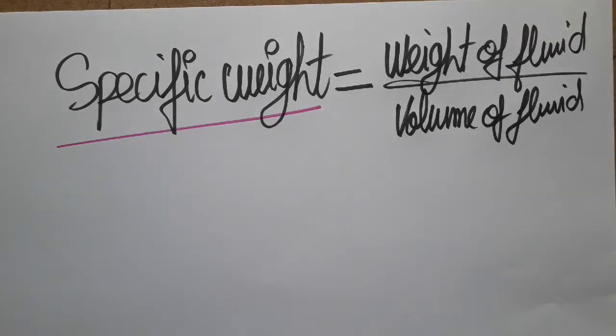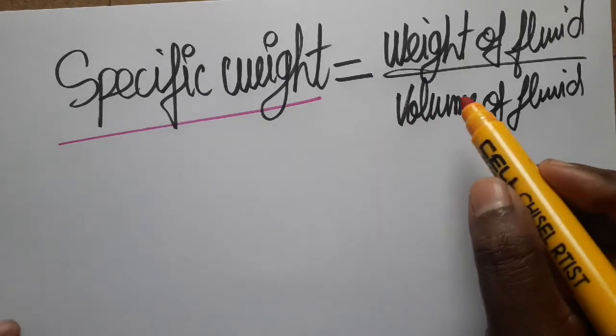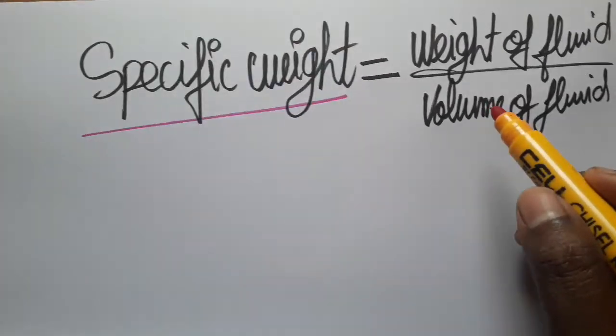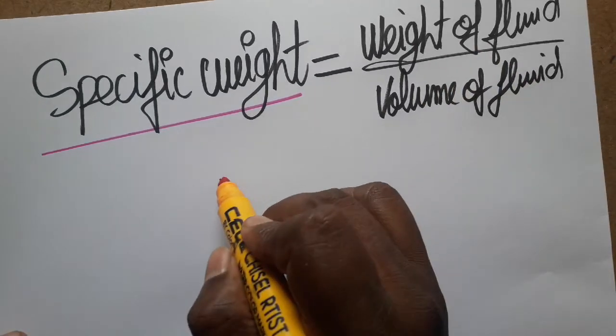Friends, today we are going to learn about specific weight SI unit. Specific weight is the weight of the fluid divided by volume of the fluid. Weight we can take as mass into gravity.